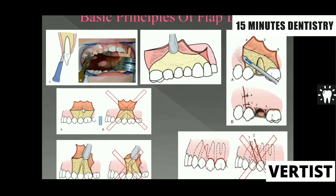When working in a given area, you have to plan properly how much bone you are going to remove, and based upon that you determine which flap to use. This is because the margin of the flap should always be resting onto sound bone after suturing it back. You must always ensure that the vertical incision is placed where the underlying bony support is present.